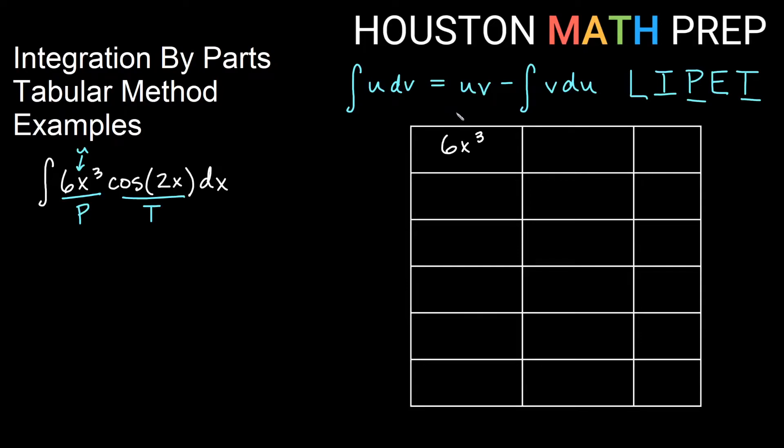We will differentiate this column. And then the dv we put in the next column, cosine of 2x, and we will repeatedly integrate that column. In the last column, remember we have alternating positive and negative ones, so it always starts with positive one.